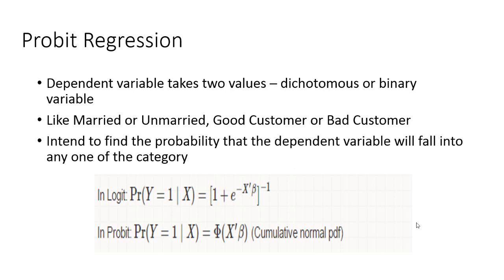Probit regression is pretty much like logistic regression. It is used when the dependent variable takes only two values or the dependent variable is dichotomous or binary variable.